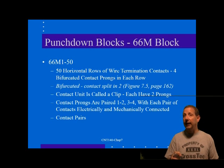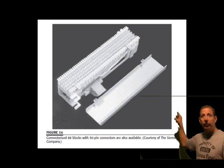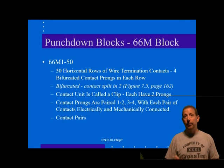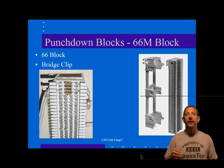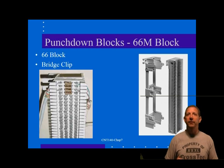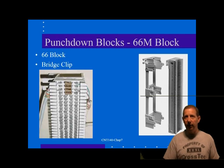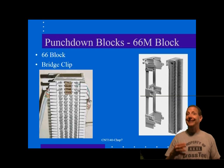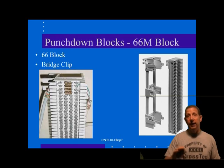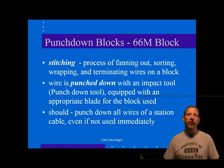Some varieties of the 66M block have 4 common contacts in each row, while others have 4 totally independent contacts in each row — so be careful what you use. Connectorized 66 blocks with 50-pin connectors are also available. These blocks are usually manufactured with clips and may have a wire-wrapped post protruding from the bottom of the clip. When the assembly is manufactured, a wire is wrapped to each post on each clip with the other end connected to the 50-pin telco connector mounted on the side of the bracket. The connector may be either male or female. The contact pins of the connector are typically wired to all 50 rows of contacts, with one pin in the telco connector corresponding to each row of the block.